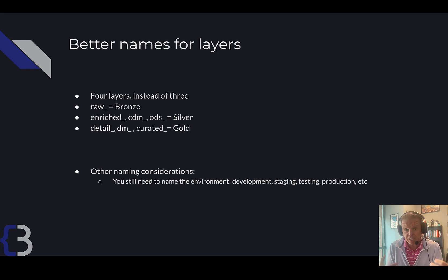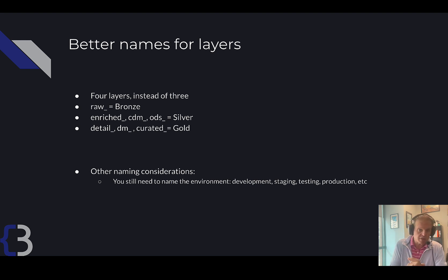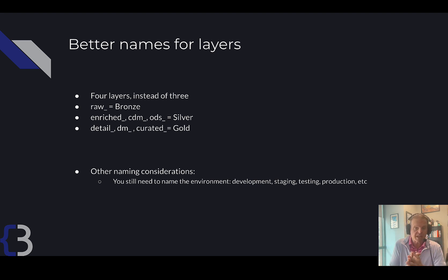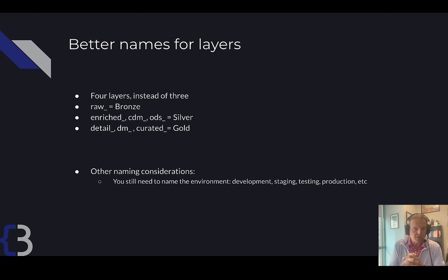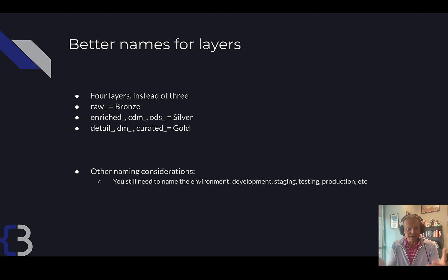There are better names instead of bronze, silver, gold. For instance, in the bronze layer you might just call it the raw layer, the landing layer, or the staging layer. For the silver layer — where we start having common data models like an employee list and a customer list — you might call it enriched, or I like to call it CDM, which stands for common data model. Or the ODS, operational data store, which is what it's traditionally been called.